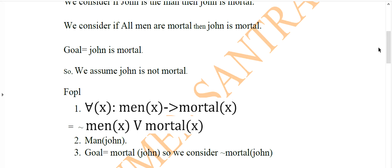First of all, we convert each sentence into FOPL. All men are mortal — the first order predicate logic for this statement is: for all X, men(X) implies mortal(X). That means for all X, if those X are men, then those X are also mortal.